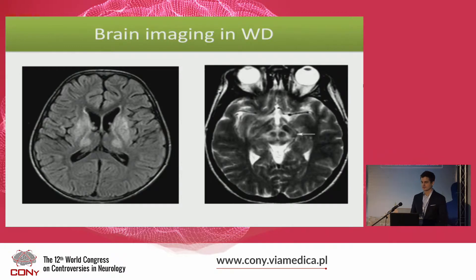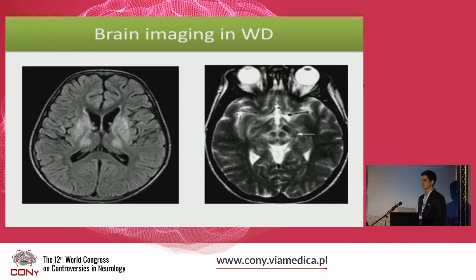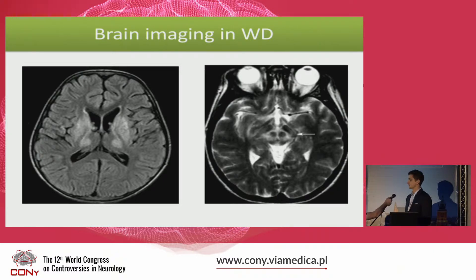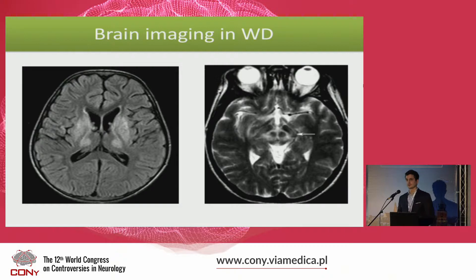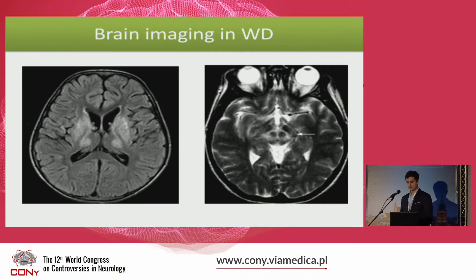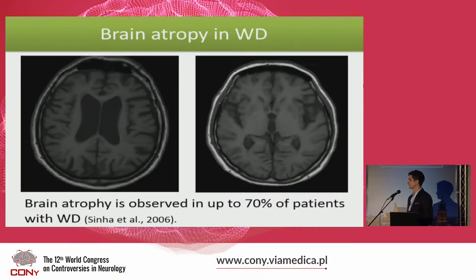Wilson's disease affects primarily the liver and the brain. On magnetic resonance images of the brain we often see bilateral hyperintensities in the white matter of basal ganglia, brain stem, and these hyperintensities often form characteristic constellations such as the face of giant panda, which you can see here on the left. These findings are very supportive of the diagnosis of Wilson's disease.